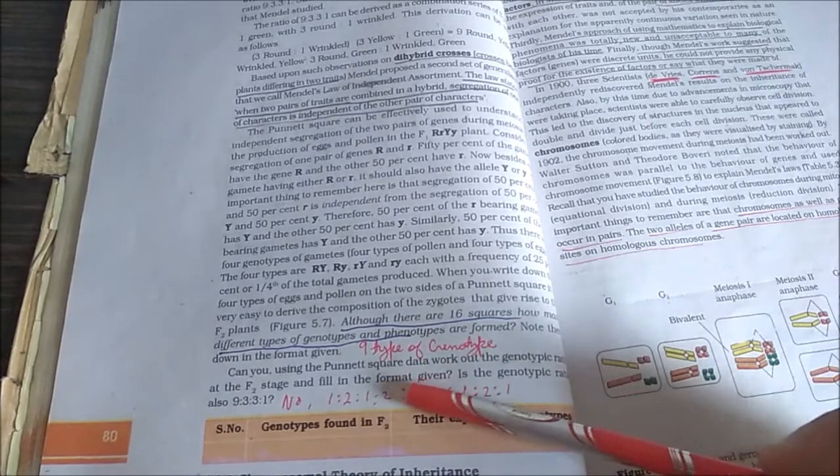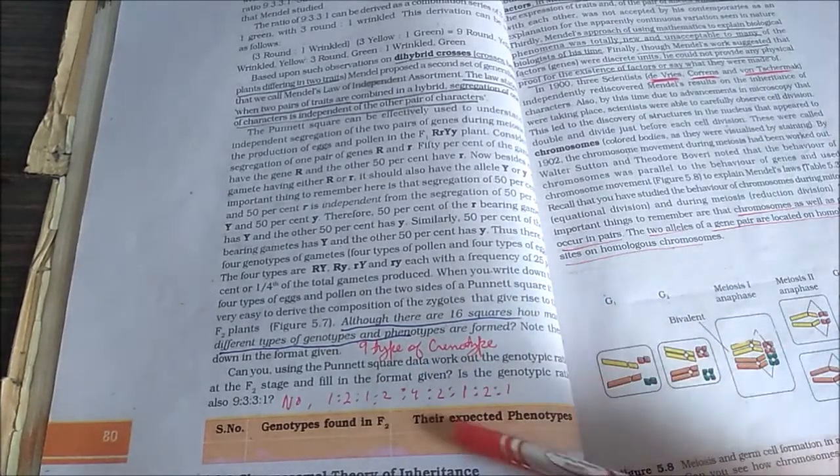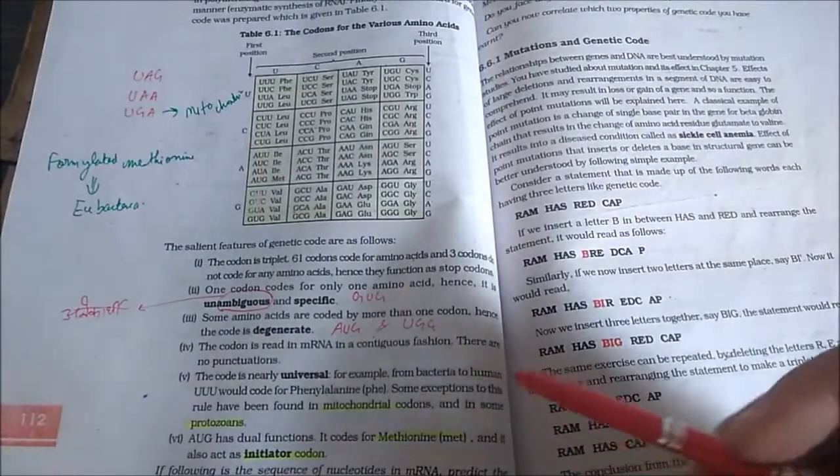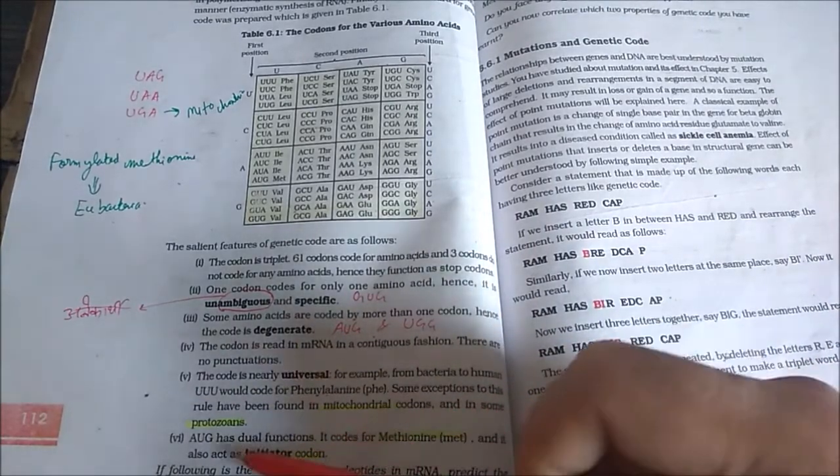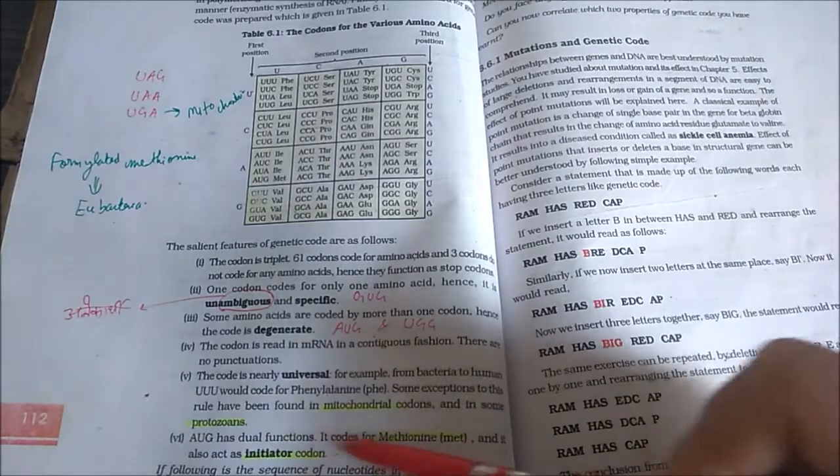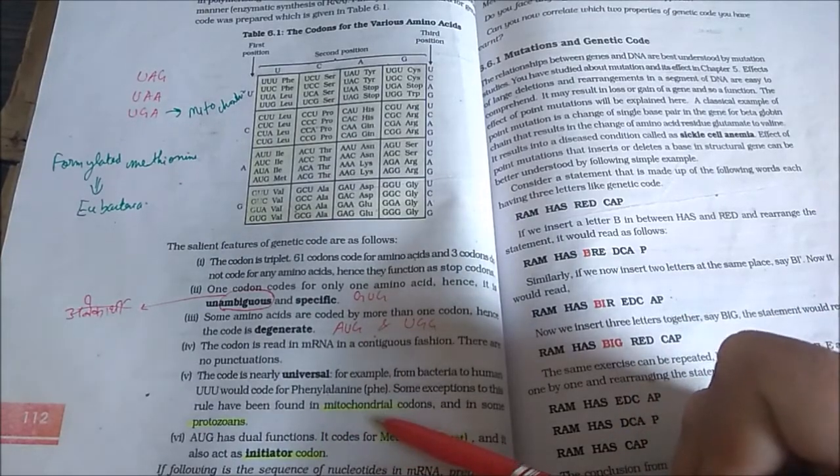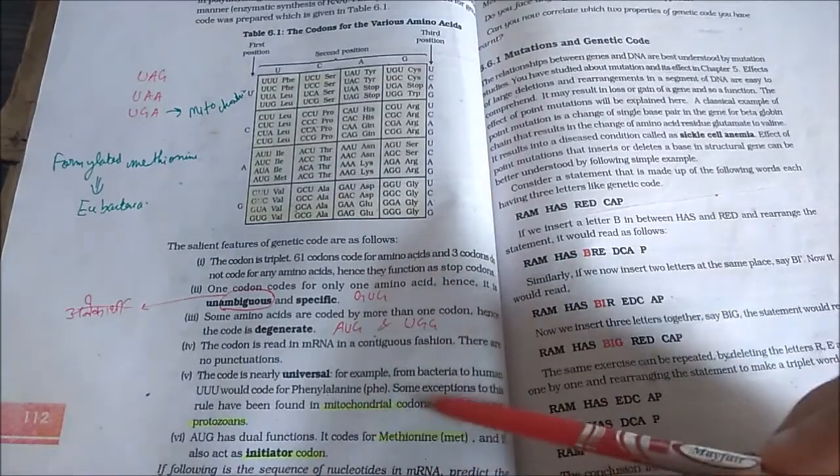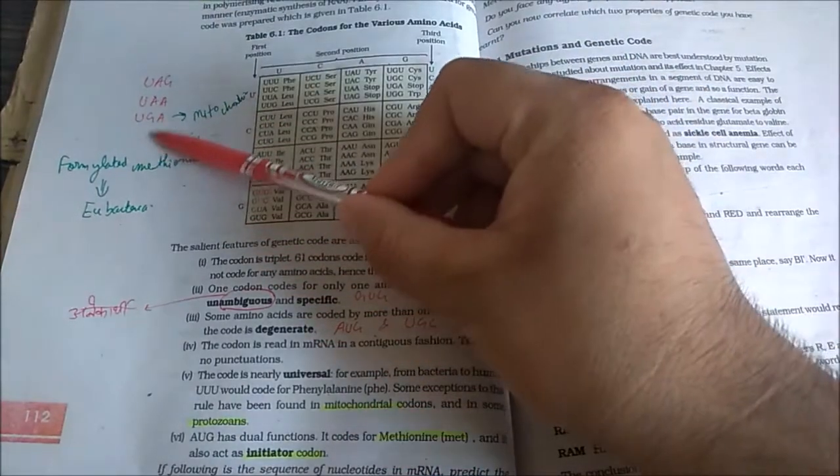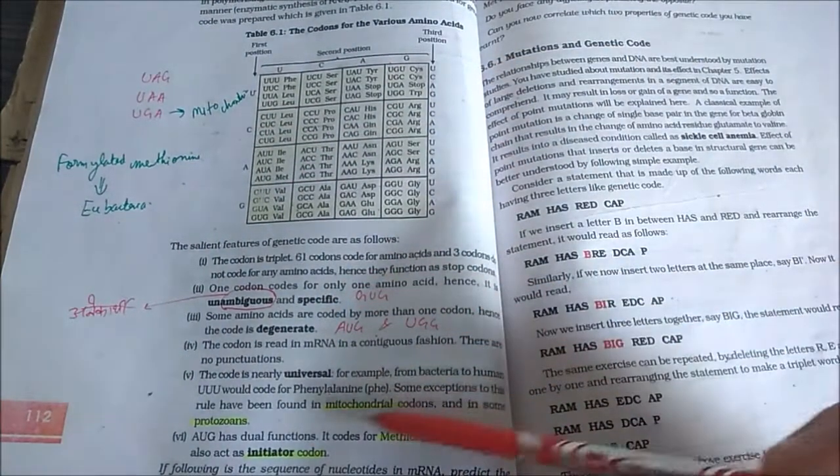Previously in NEET they have asked this question. In this topic he has written 'some exceptions to the rule have been found in mitochondrial codons and in some protozoans.' So what are they, what are those which are exceptions to mitochondria? So I have found the answer of this question. This one for mitochondria is UGA. Like that you have to find for protozoa as well. If you refer to any other textbook then you will get the answer.